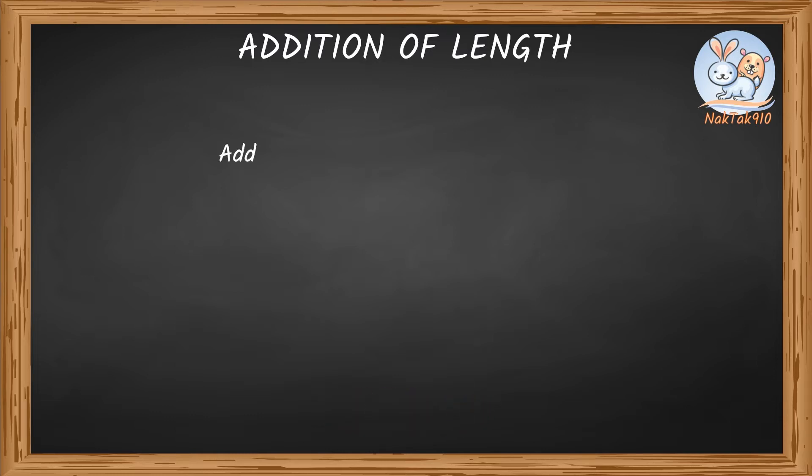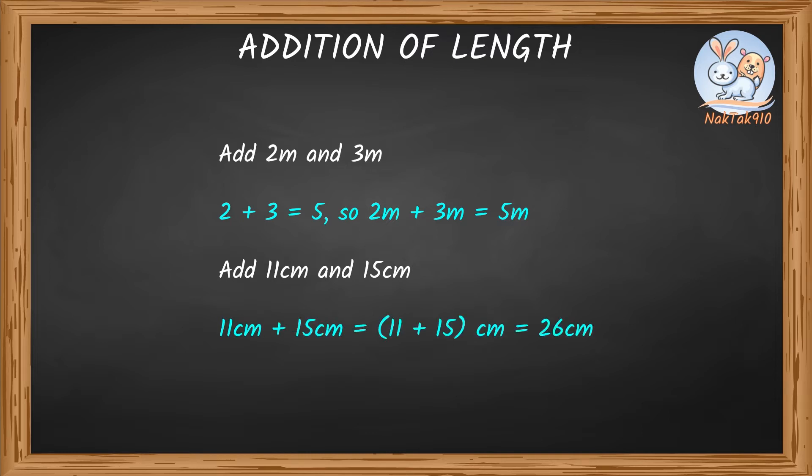Say we need to add 2 meters and 3 meters. This should be done the same way we do our whole number addition. 2 plus 3 equals 5, so 2 meters plus 3 meters equals 5 meters. Add 11 centimeters and 15 centimeters. 11 centimeters plus 15 centimeters equals 26 centimeters.